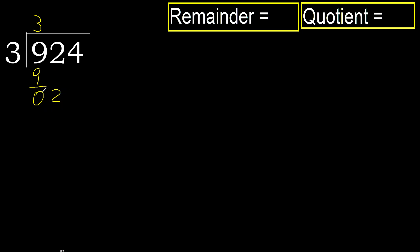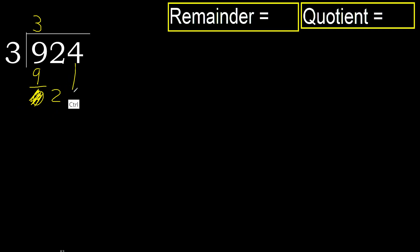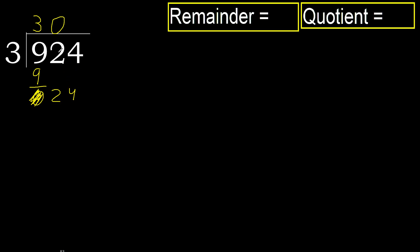Next digit: 2. Eliminate 0. 2 is less, therefore go to the next digit. 24 is not less. There are 2 numbers, therefore complete with 0. Always complete with 0 when there are 2 numbers.